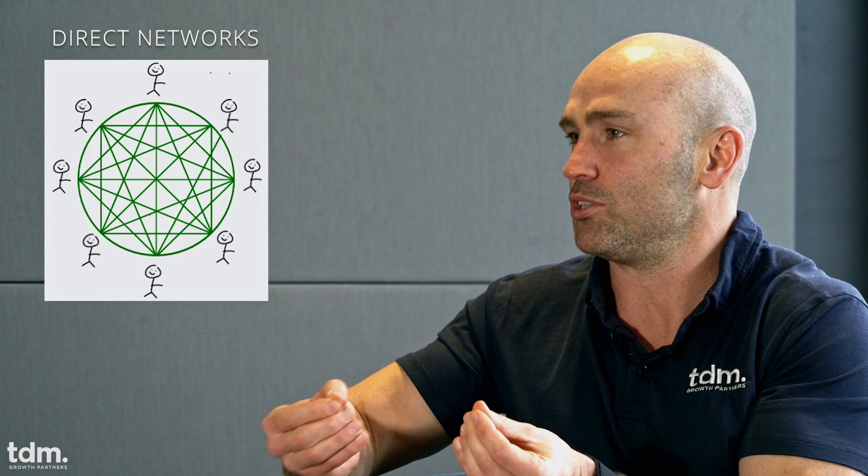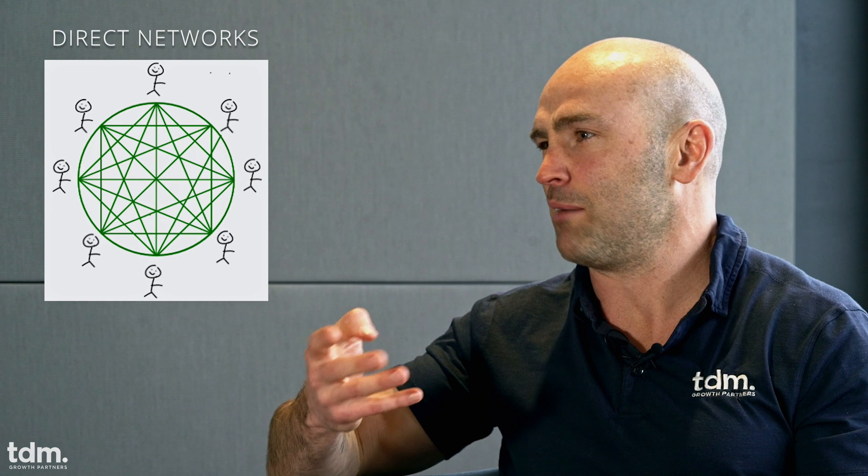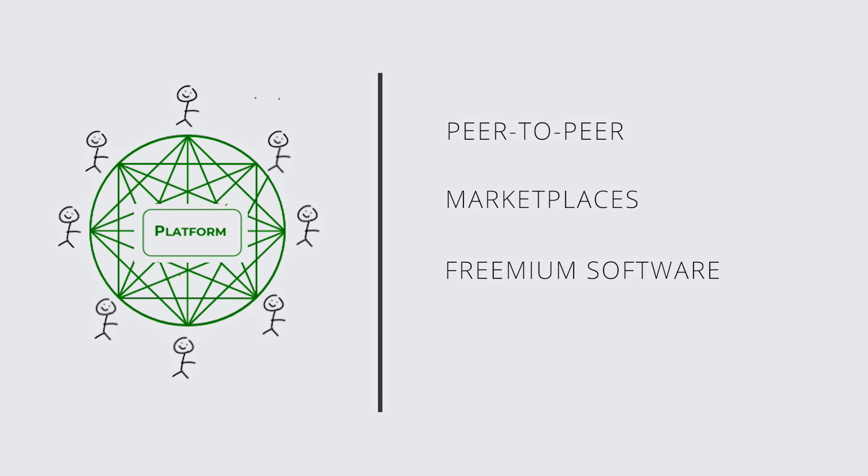Starting with direct networks: when we think about direct network effects, it's around how homogenous the user base is. If it's a homogenous user base, we think of it as a direct network. There are four subcategories: peer-to-peer networks, marketplaces, freemium software, and customer acquisition and retention models. A couple of peer-to-peer examples: WhatsApp is a perfect example of a peer-to-peer messaging network; Square's Cash App is a peer-to-peer financial service.